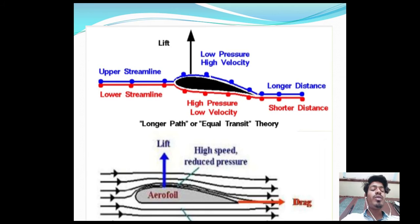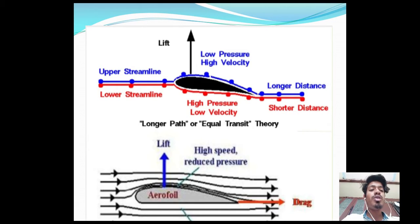The first point of the airfoil is called the leading edge and the last point is called the trailing edge. The line joining the leading edge and trailing edge is called the chord line. The upward force is lift and the backward force is called drag force. Here we can see high speed, reduced pressure, and upper streamline; lower streamline has high pressure and low velocity. Low pressure gives high velocity from the airfoil. The blue line shows the longer distance and the red line shows the shorter distance.